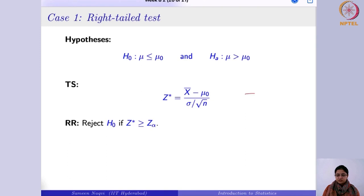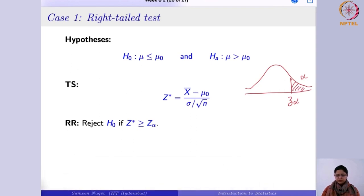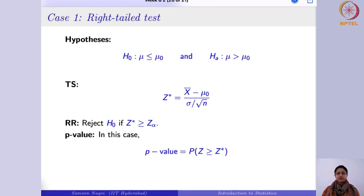You reject the null hypothesis if z* is greater than or equal to z_α, where z_α is the critical value from the table. On the distribution, z_α is marked with area α to the right. If the test statistic falls to the right of z_α — in the rejection region — you reject the null hypothesis, since it aligns with your alternative of being greater than z_α. This is the rejection region approach.